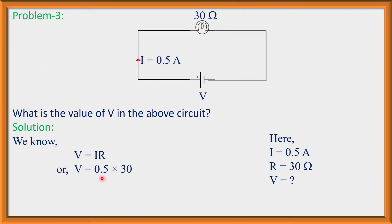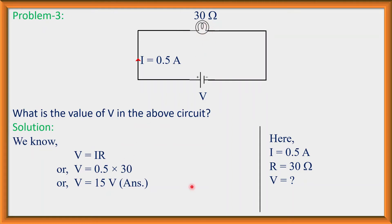After calculation: V = 0.5 × 30 = 15 volt. So the voltage of this source is 15 volt, and the potential difference across this electric bulb is 15 volt.